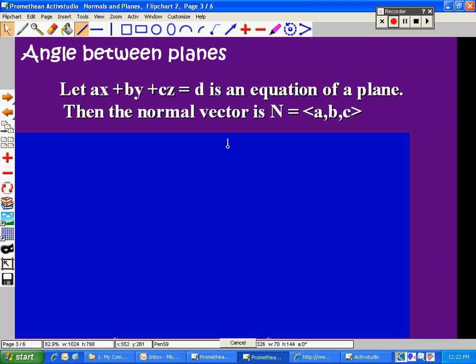The normal vector, or a vector perpendicular to that plane, is equal to <a,b,c>. The components of the normal vector are the same as the coefficients of the equation of the plane.